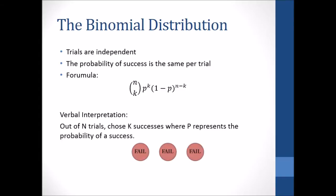So to illustrate this, let's say I have three trials and all three of them turn out to be failures. So in equation form, that's out of three, choose zero successes. So the success rate is to the zero power, meaning that it didn't happen. And the failure rate is to the third power, meaning that it happened three times.